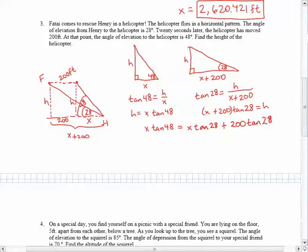So my goal is to get the x's together. So I am going to subtract x times the tan of 28 from both sides. Now I actually could plug in these on my calculator and figure out what the tan of 48 is, as well as the tan of 28.